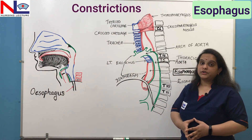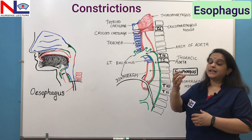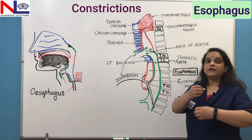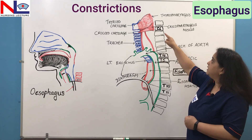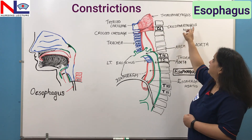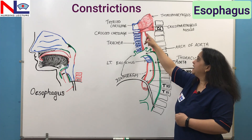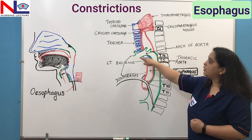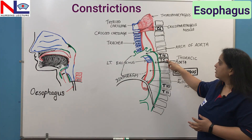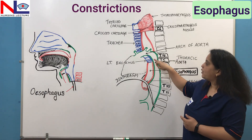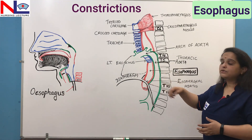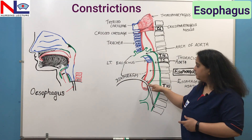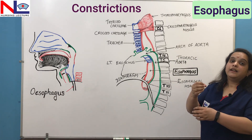Next, there are four areas where the esophagus becomes constricted. The first is at C6, where the cricopharyngeal sphincter is located. The second is at T4, where the arch of the aorta crosses the esophagus. The third is at T5, where the left bronchus crosses the esophagus. The fourth is at T10, where the esophagus pierces the diaphragm. These are the four constrictions where the esophagus is narrowed.